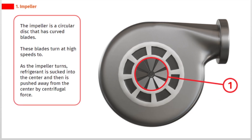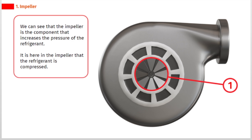The impeller is a circular disc that has curved blades. These blades turn at high speeds. As the impeller turns, refrigerant is sucked into the center and then pushed away from the center by centrifugal force. The impeller is the component that increases the pressure of the refrigerant — it is here that the refrigerant is compressed.